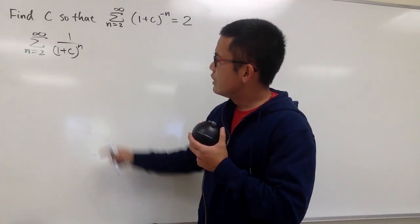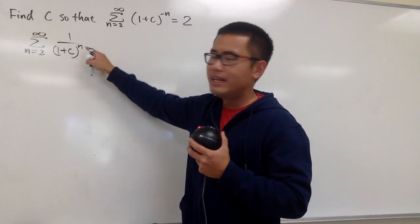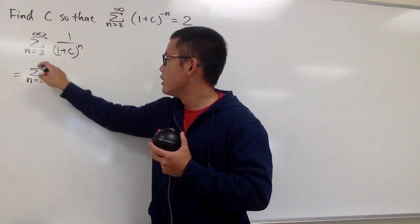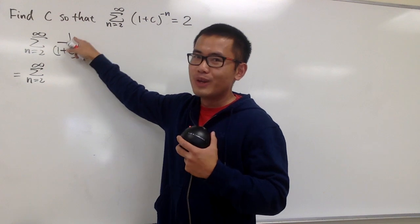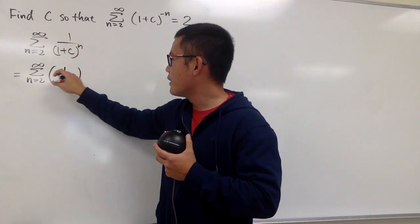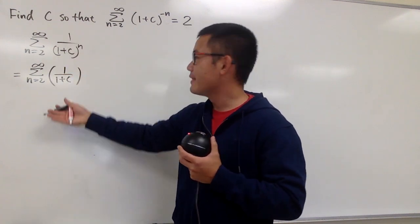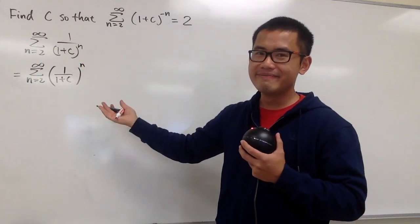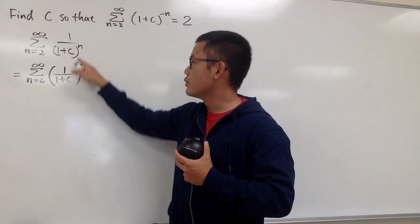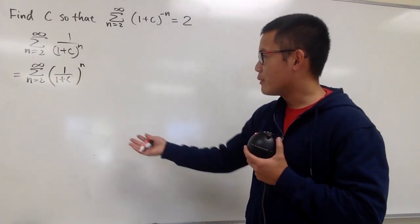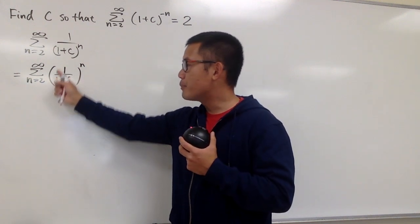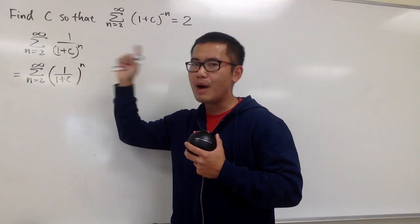We have n in the exponent, and on the top we have 1. This is the sum when n goes from 2 to infinity. 1 is of course the same as 1 to the nth power. In that case, I can look at this as a big parentheses with 1 over (1 plus c) inside, raised to the nth power. Because this is the same as 1 to the nth power, which is just 1, and then the denominator to the nth power. Now, as we can tell, this is almost like a geometric series, because we have a number inside raised to the nth power.